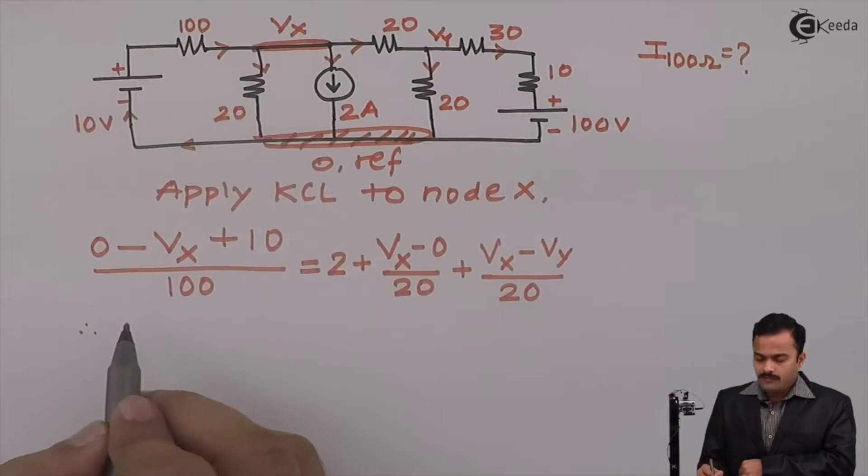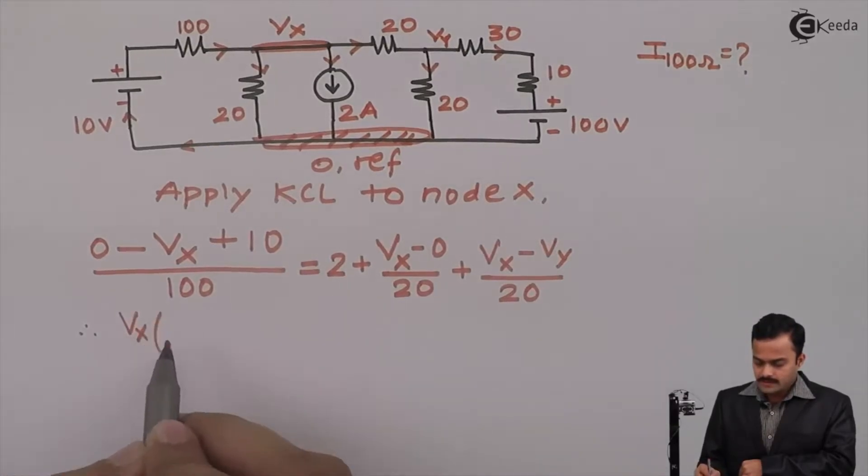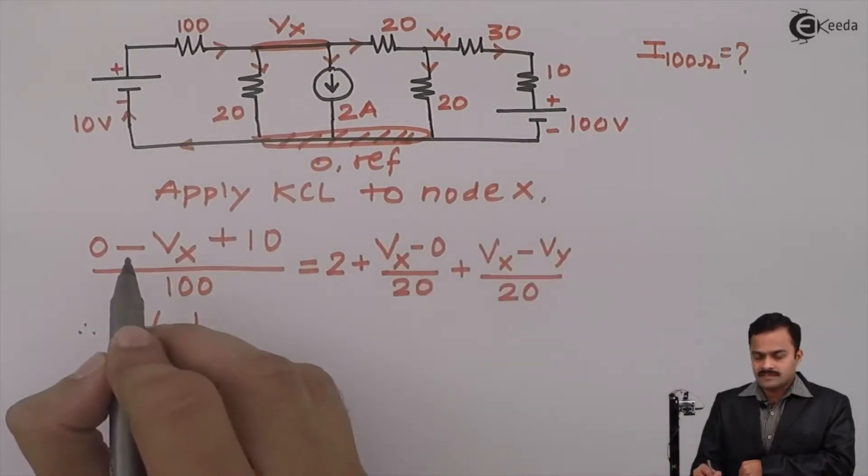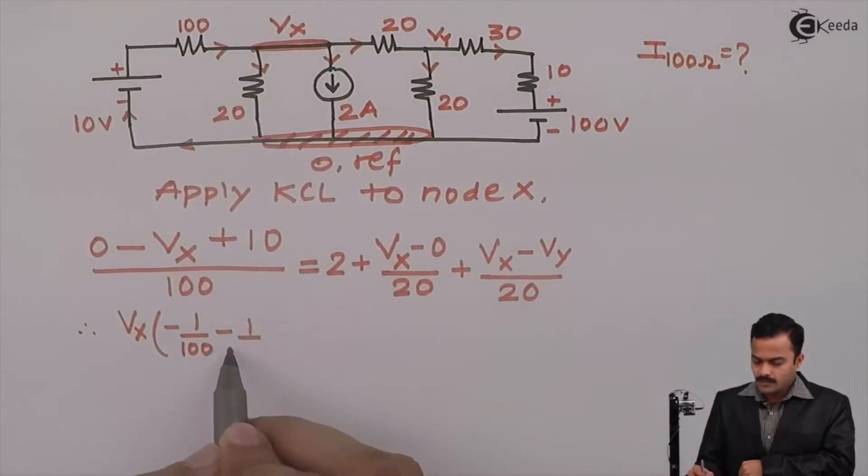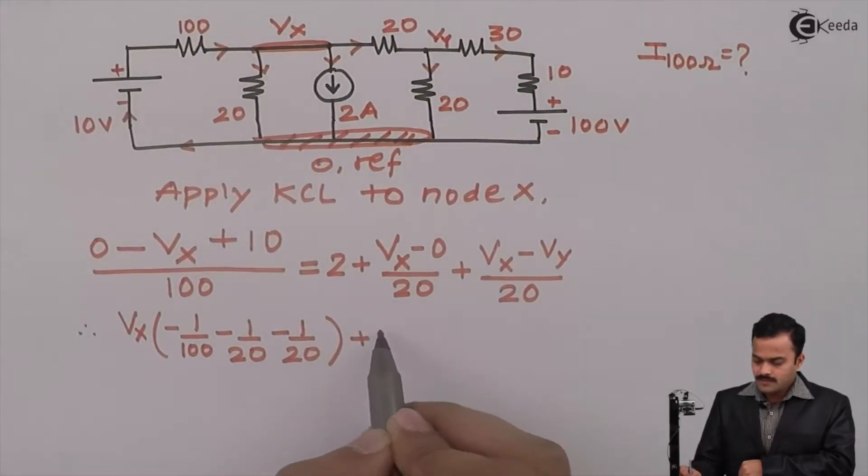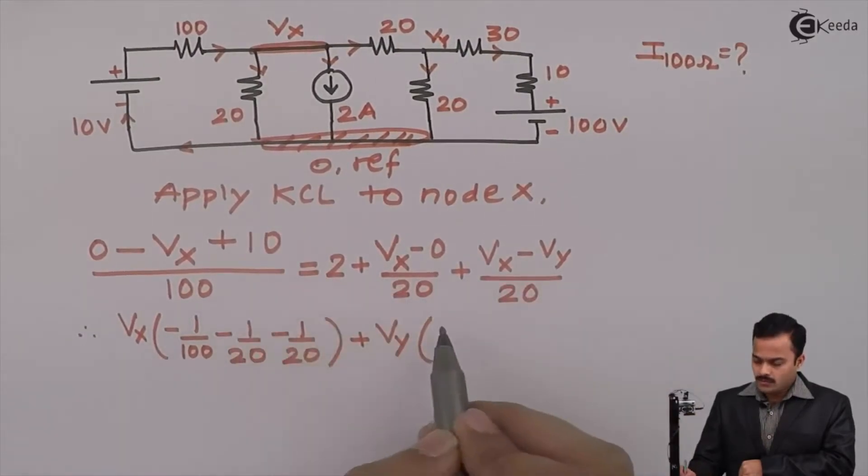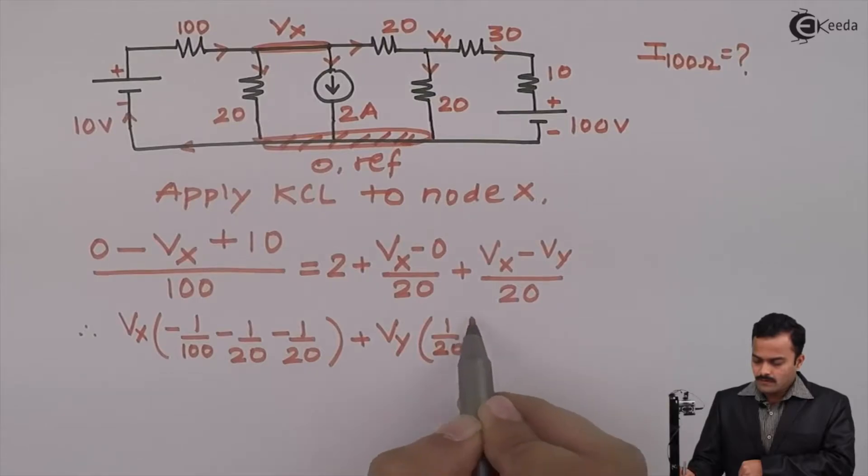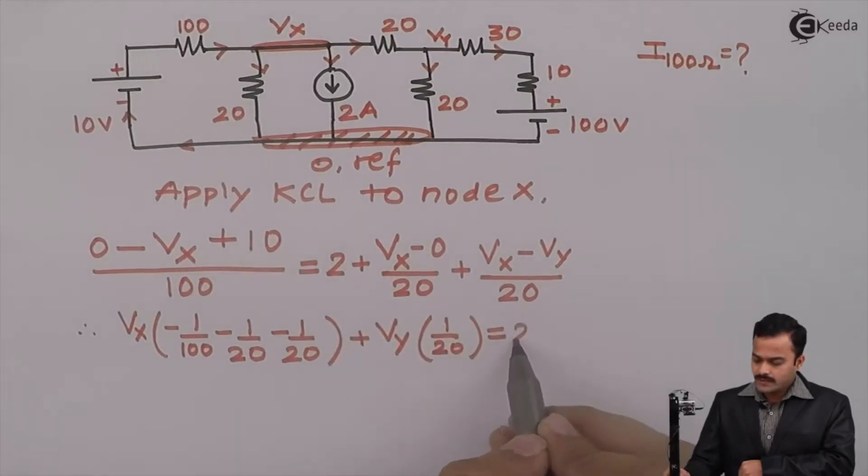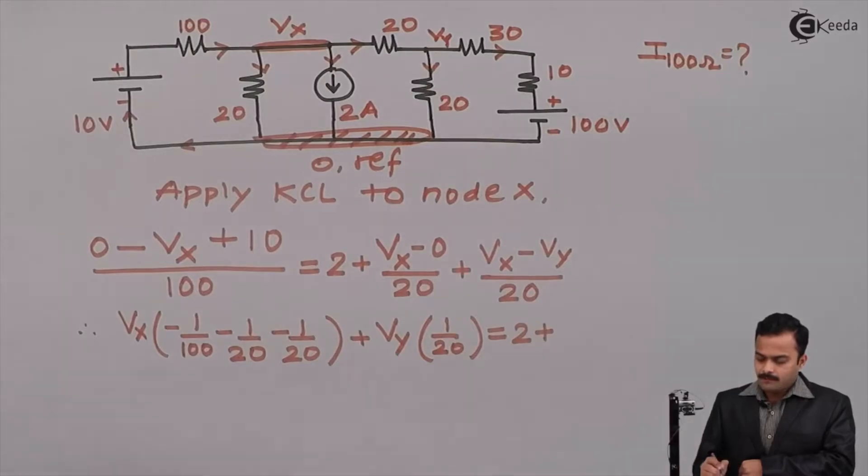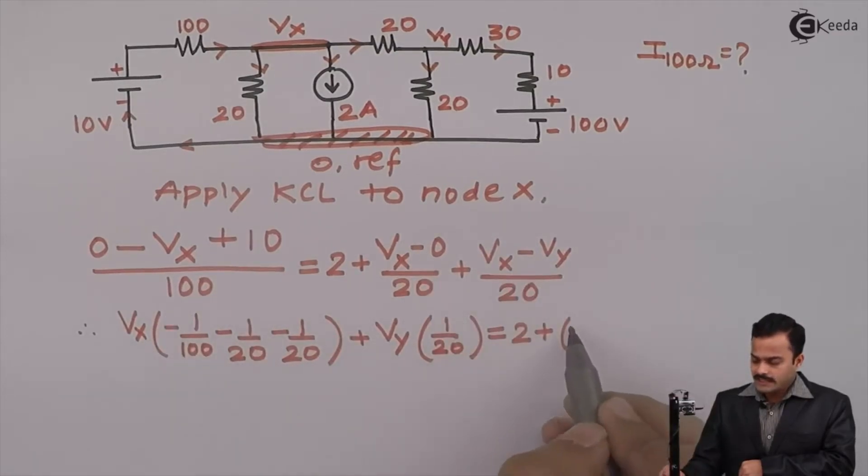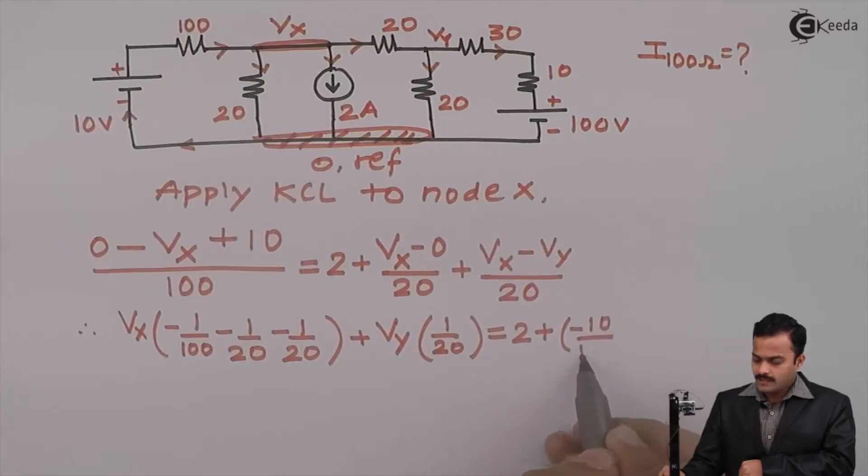Let's club all Vx terms together. So Vx here, minus 1 by 100. If I take all these terms from this side, I will have minus 1 by 20. Plus Vy coefficient is 1 by 20. Equal to all constants. So right now 2 is present, I will keep it as it is, plus this term. Here it is 10 by 100 plus, but when I take to other side, it will become minus 10 by 100.